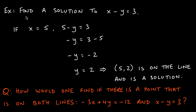Now let's bring these questions together. We're asked to find a solution to 2x minus y equals 3. Remember, this is a linear equation in two variables, so it has infinitely many solutions — all points on the line. If I pick x equals 5 and plug it in, I get 5 minus y equals 3. Since 5 is being added, I move it over and get negative y equals 3 minus 5, which is negative 2.